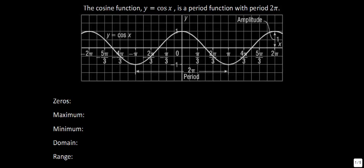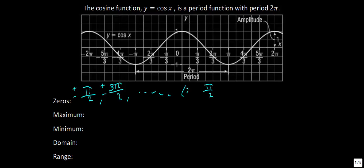Looking at the zeros of cosine: the graph is split into six pieces between 0 and π. If this is π, halfway would be π/2. Counting to the other side gives −π/2, so we have plus or minus π/2. Continuing, between π and 2π we get 3π/2, and similarly −3π/2. In general, the zeros occur at values of π/2 multiplied by (2k + 1), where k is an integer.